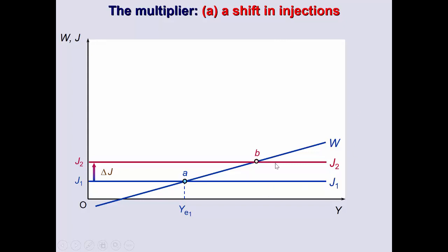A change in injections leads to a new, higher equilibrium income level at point E2 — a small change in J induces a greater rise in income. By the way, it's the same for withdrawal changes: if withdrawals decline, that gives us exactly the same amount of change in income. Whether J shifts upward or W shifts downward to point C, we get exactly the same new equilibrium income level. The increase in income is greater than the increase in J.